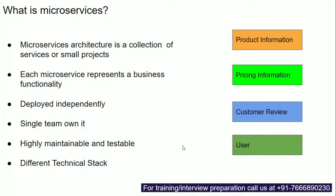Each microservice is built around a business functionality. Product information is built around one business functionality, and pricing information is built around pricing functionality. Every individual microservice is deployed independently without impacting other microservices. For example, the customer review microservice can be developed and deployed independently without impacting the product information microservice, making things much easier for the entire team.